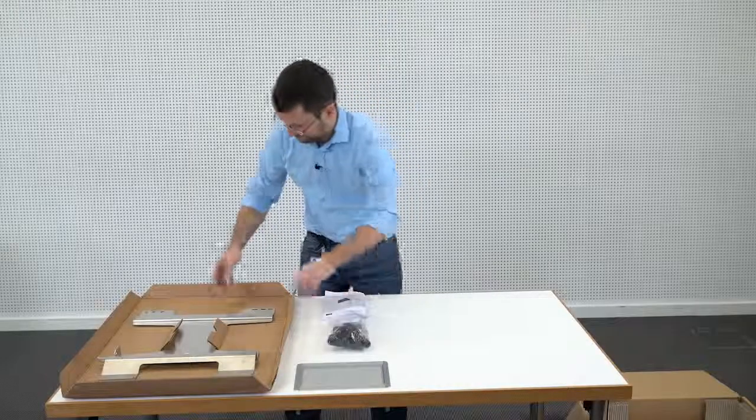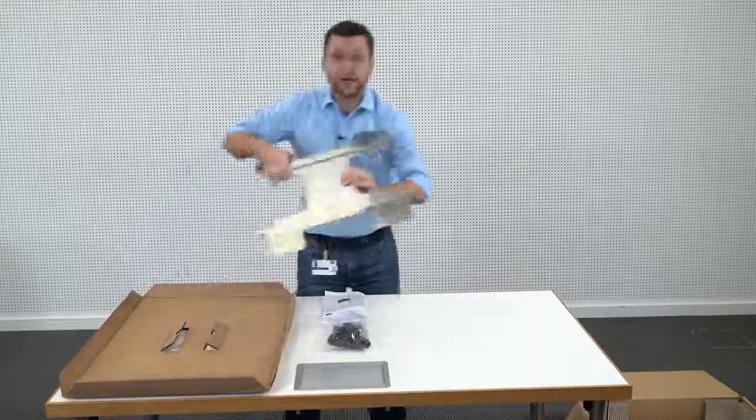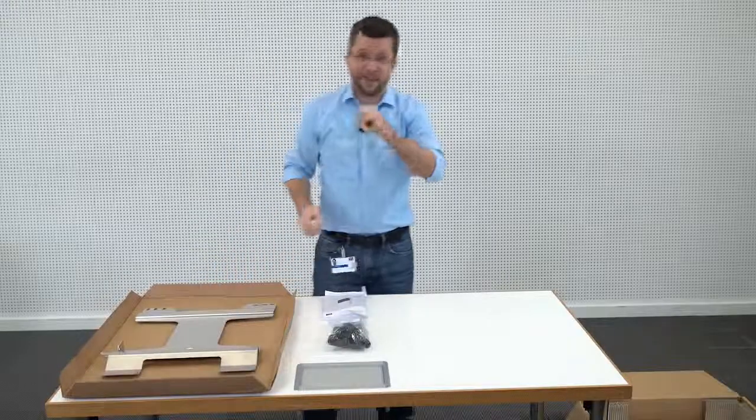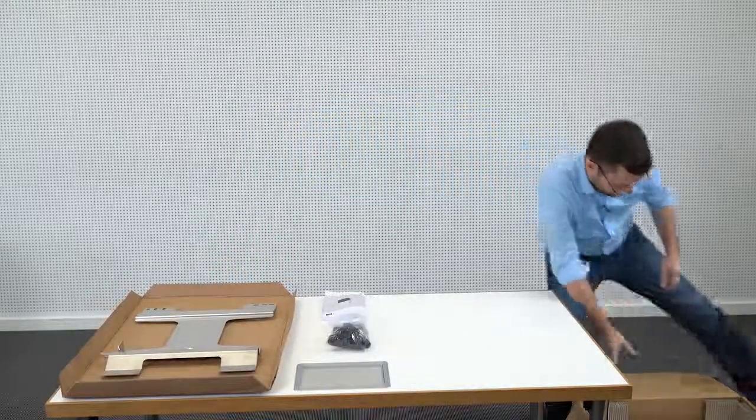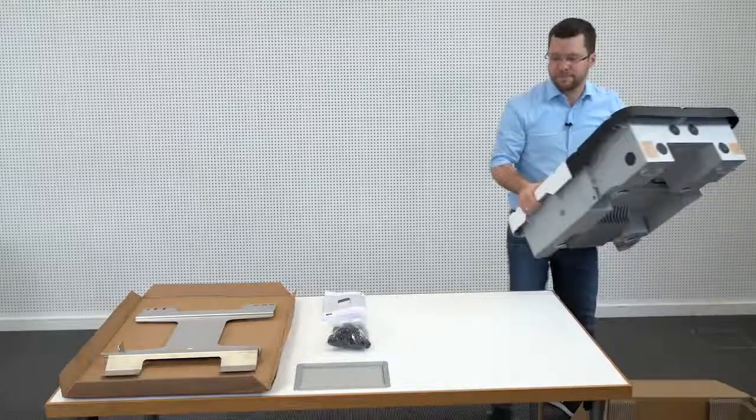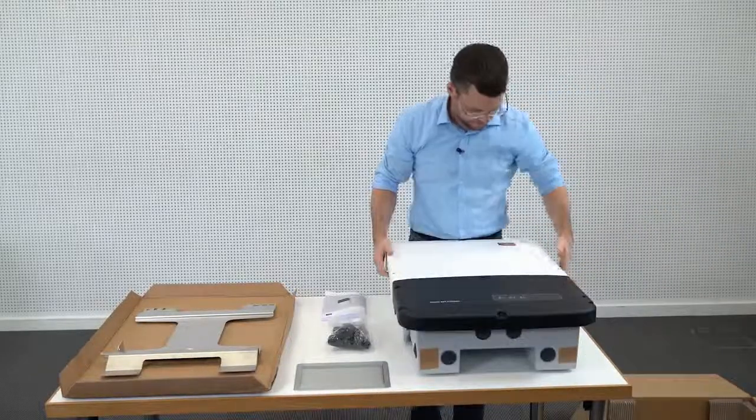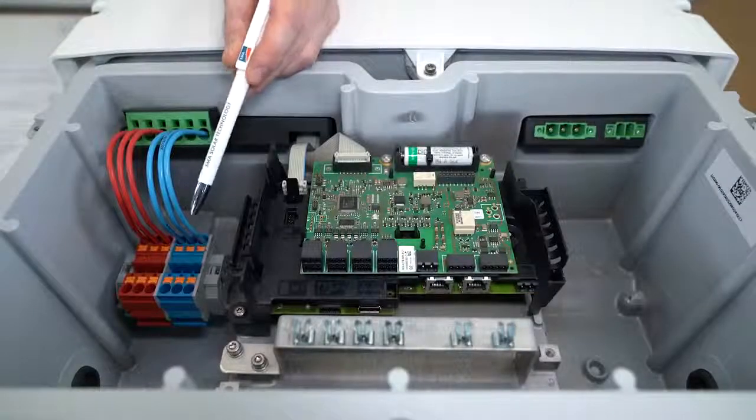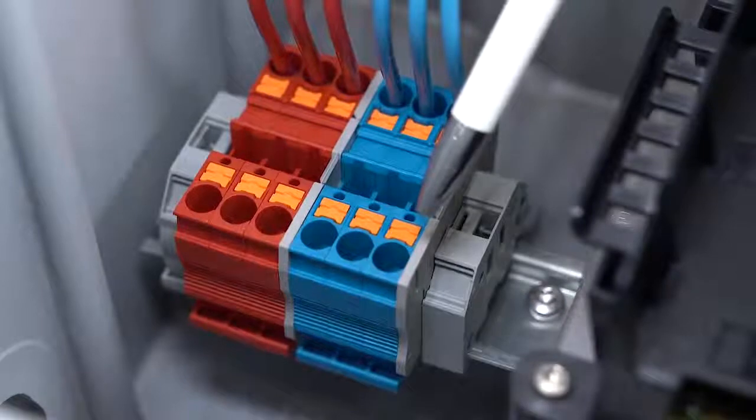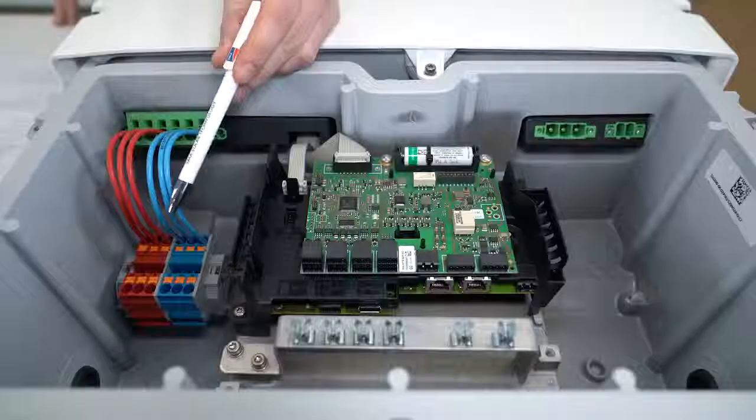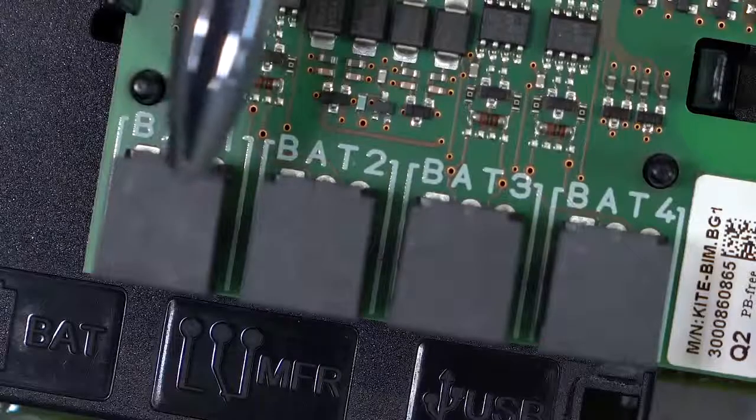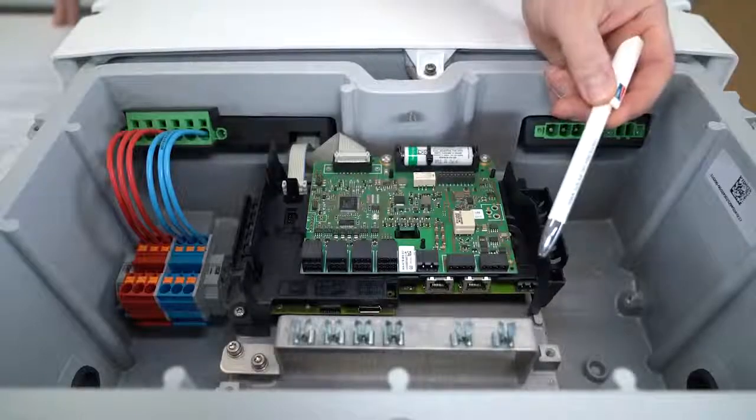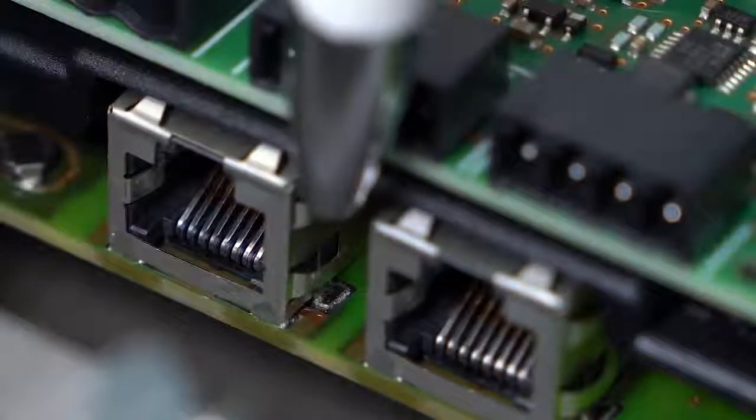Then, we have the wall mounting bracket. And finally, the inverter itself of course. Here on the left, we see the DC connection ports where we connect the battery itself. This is the battery communication connection port. And down here, we have the network connections for Ethernet connection.